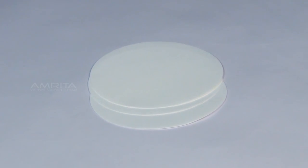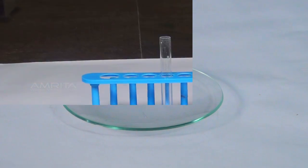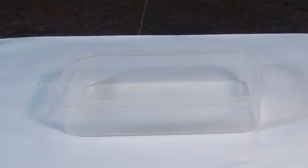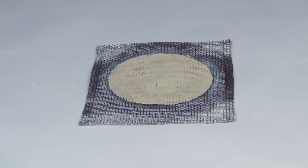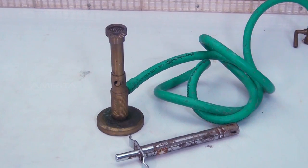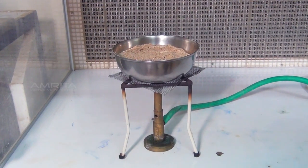filter papers, watch glass, test tube, evaporating dish, trough, stand with clamp, wire gauze, tripod stand, Bunsen burner and sand bath.